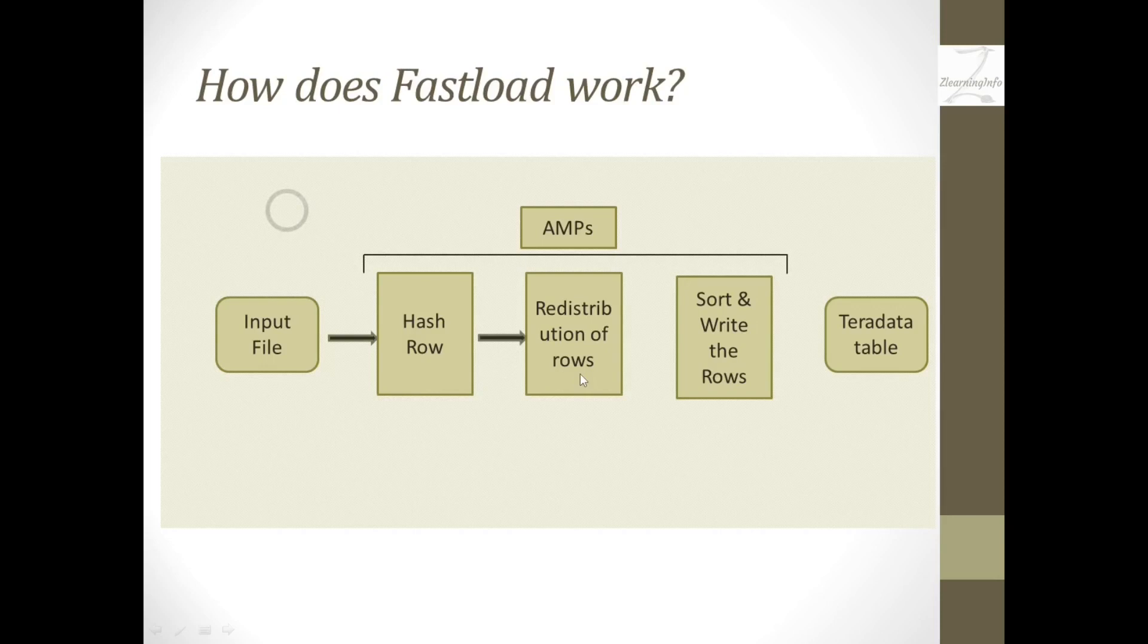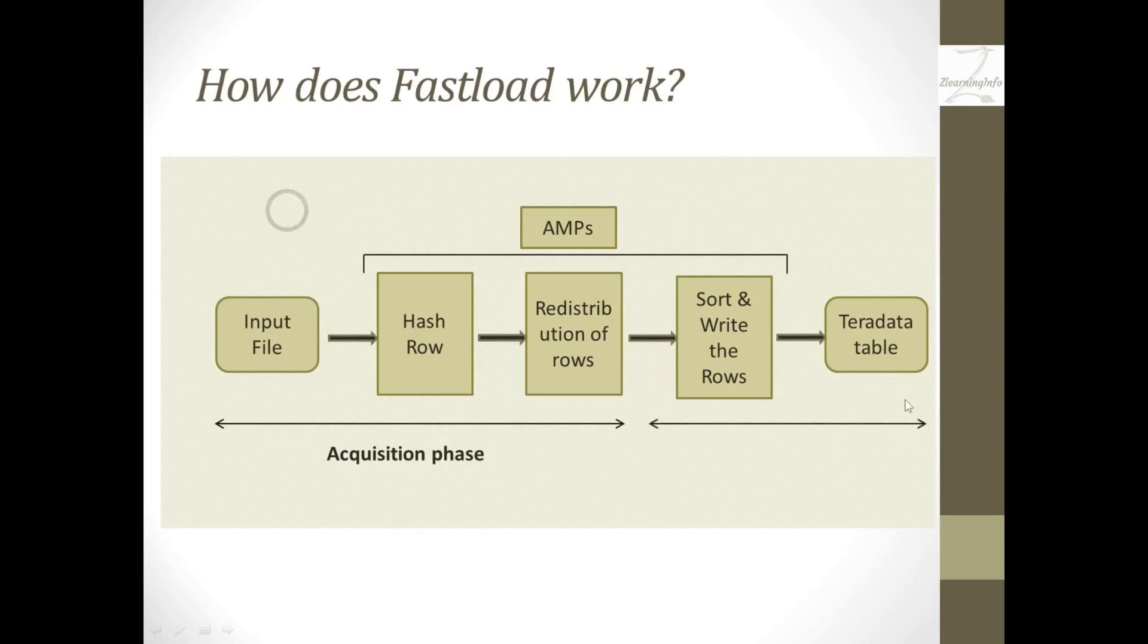Once redistribution is completed, all the AMPs will have their records, but they will not be in sorted order. When AMPs receive the end loading command, they will sort the rows and write them into the table. From taking data from the input file to redistribution in AMPs is called the acquisition phase, and from sorting the data in AMPs to writing it into the Teradata table is called the application phase.